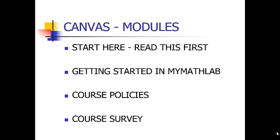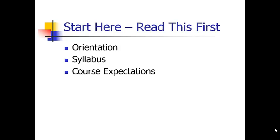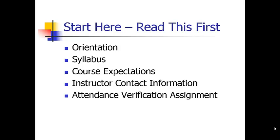The course survey will need to be completed at the end of the semester. Within the first module, you will find the orientation video you are watching now, the syllabus — which you will need to read carefully — course expectations, my information (which is also located on the syllabus), and an attendance verification assignment.